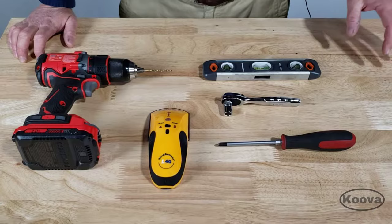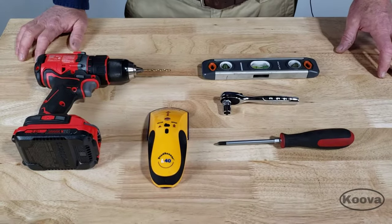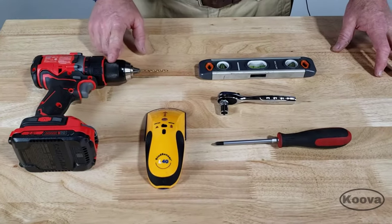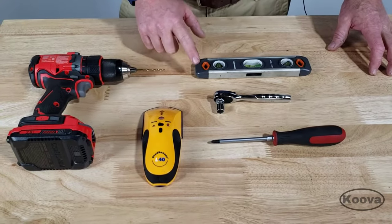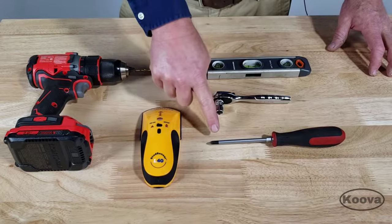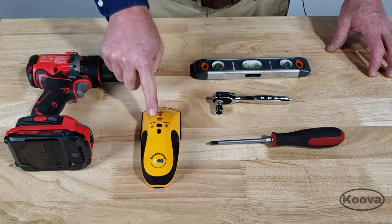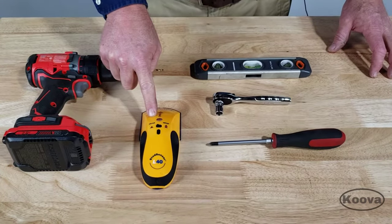To install the Koova Garage Organizer, you just need a few simple tools. You're going to need a drill with a 1/8-inch drill bit, a level, a 7/16-inch wrench, a Phillips screwdriver, and while not absolutely necessary, a stud finder makes it super easy to find a stud.